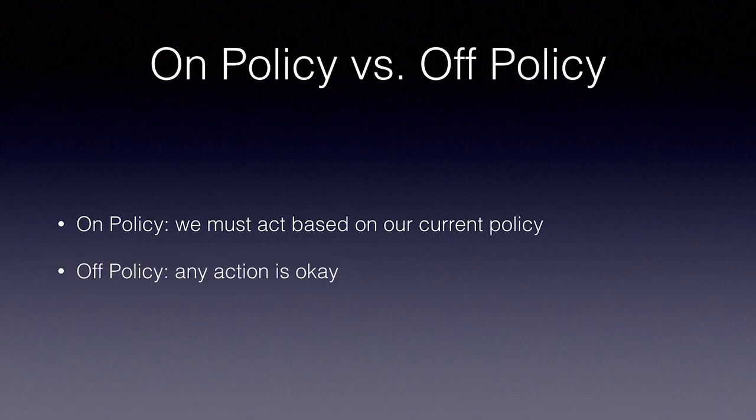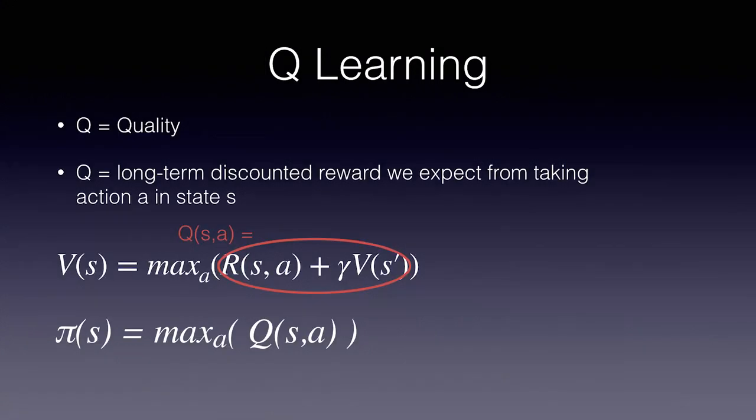In an off policy algorithm, we can take any action whatsoever and even train on recorded data from a human or another algorithm playing the game. And no matter what we do, the values will eventually converge. The technique we're learning in this tutorial is called queue learning. And the primary advantage of queue learning is that it is an off policy method. It doesn't matter which policy we follow as long as we play the episodes. But if we were to take only random actions that would create much longer episodes and our values would take a lot longer to converge. So epsilon greedy is still the ideal way to play since it converges fastest.